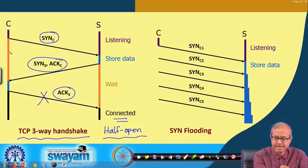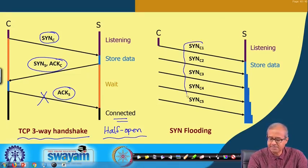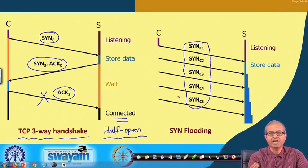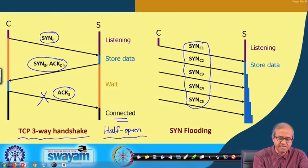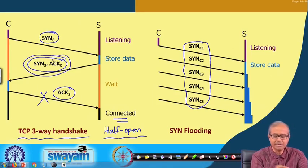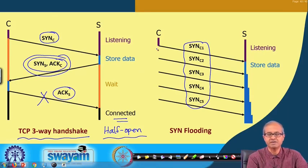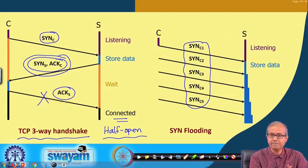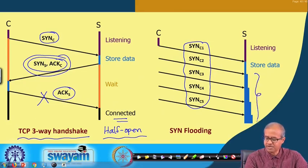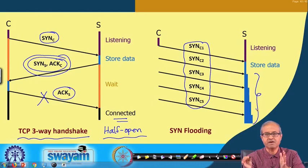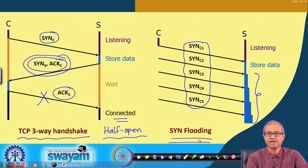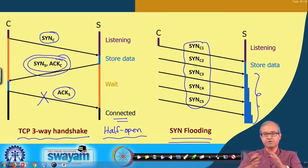What will happen is that the client will be sending back many SYN packets where the IP addresses are spoofed. So the server sends back SYN-ACK packets, but they are sent not to the client but to some other dummy IP addresses which will not be sending back the third ACK. So the buffers will get accumulated — this half-open connection information will accumulate — and this is what is referred to as SYN flooding. The server will not be able to accept any further connection because the buffer is full, and even legitimate connections will be rejected.